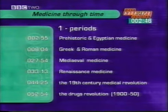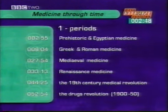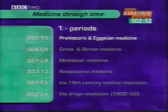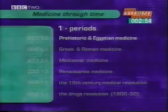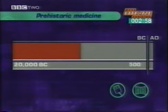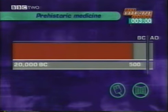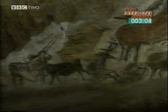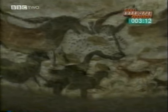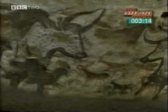The first period in the history of medicine we're going to look at is prehistoric and Egyptian medicine. There are real problems in finding out about the prehistoric period, with no written evidence available. Evidence is limited to things like cave paintings, artefacts and skeletal remains from graves. It's also possible to study more recent peoples with comparable lifestyles, such as 19th century Australian Aborigines.